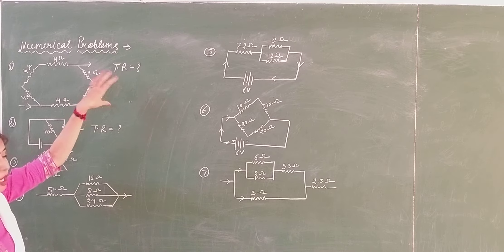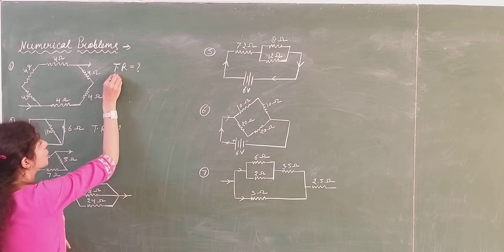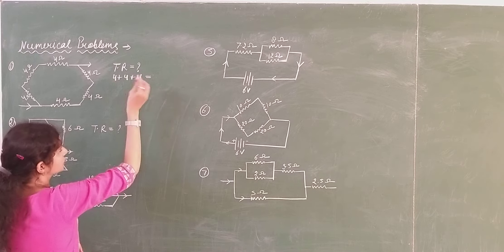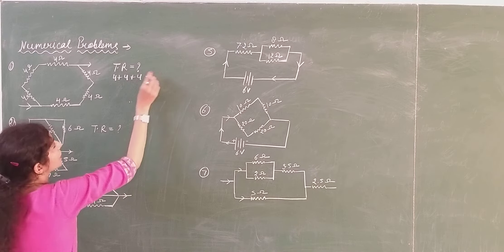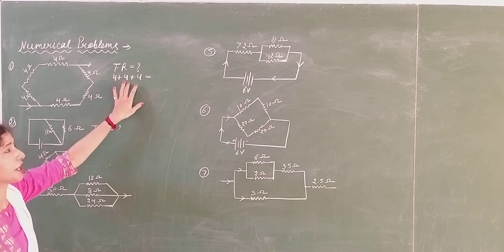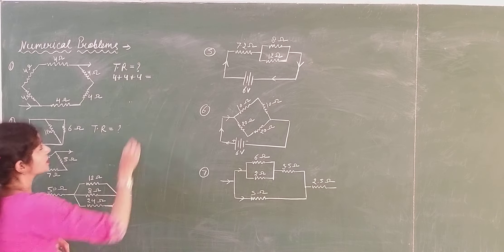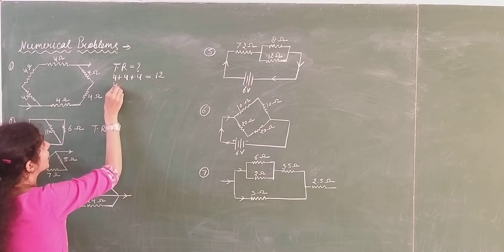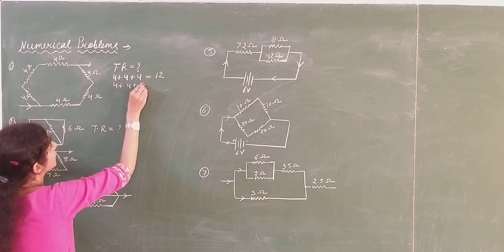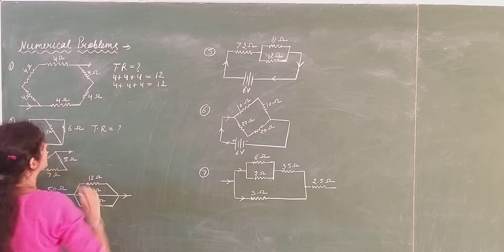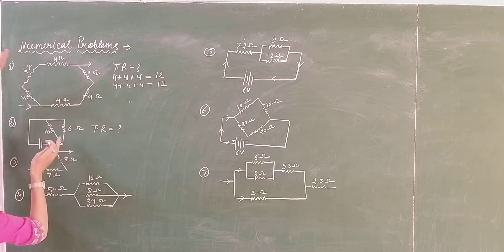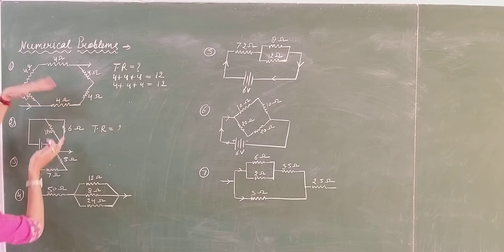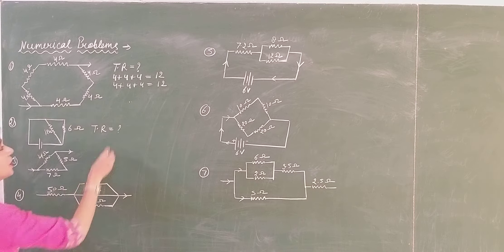So that means this combination becomes parallel with this combination. To find the total resistance, you have to do 4 plus 4 plus 4 — that is 12 ohm for the first series combination. And for the other one, 4 plus 4 plus 4 again gives 12 ohm. This series combination resultant and this series combination resultant are parallel to each other.